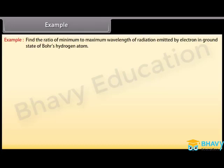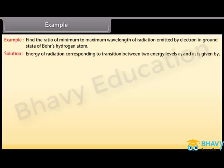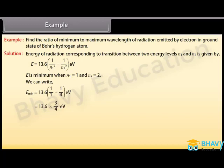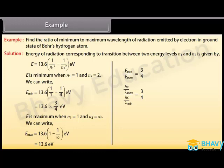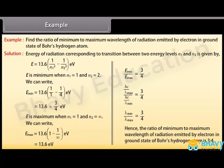Example — Bohr model of hydrogen atom: Find the ratio of minimum to maximum wavelength of radiation emitted by an electron in the ground state of the Bohr hydrogen atom. The energy of radiation for a transition between levels n₁ and n₂ is E = 13.6(1/n₁² − 1/n₂²) eV. E is minimum when n₁ = 1 and n₂ = 2: E_min = 13.6 × 3/4 eV. E is maximum when n₁ = 1 and n₂ = ∞: E_max = 13.6 eV. Taking the ratio, E_min/E_max = 3/4, so λ_min/λ_max = 3/4. Hence the ratio of minimum to maximum wavelength is 3:4.